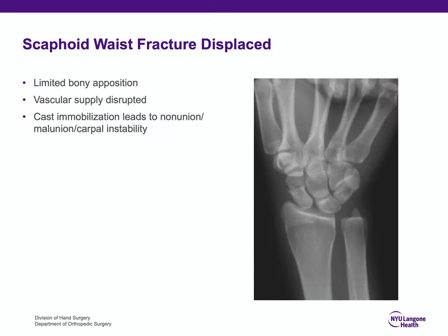The displaced scaphoid waist fracture is different from the non-displaced type. There is less bony apposition, and the vascular supply is generally disrupted because it's a higher energy injury. It's been demonstrated in the literature that for displaced scaphoid waist fractures treated with cast immobilization there is a 50% non-union rate — and with union, it often leads to malunion and painful carpal instability.